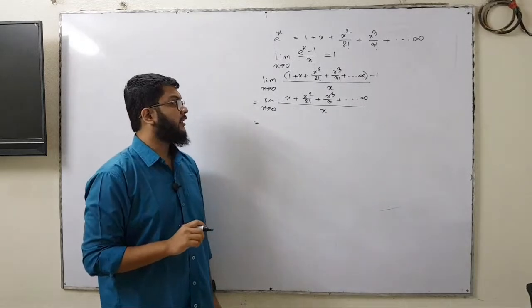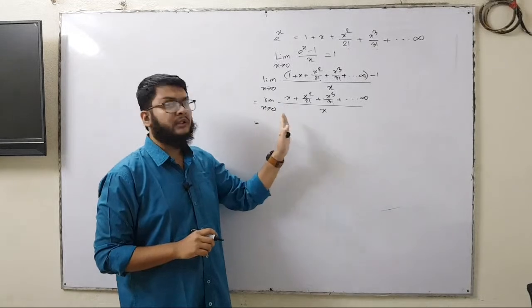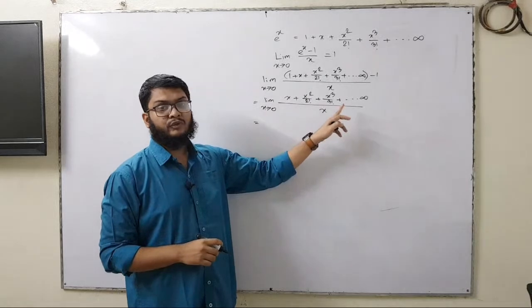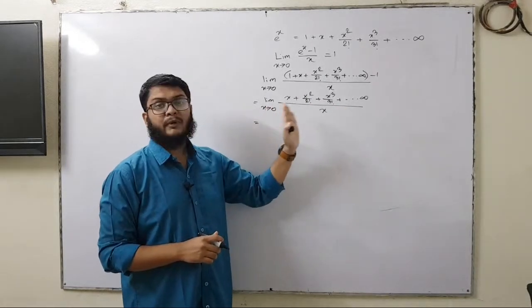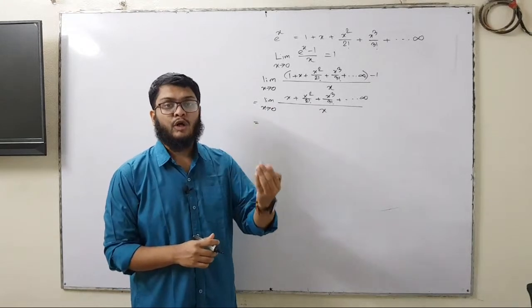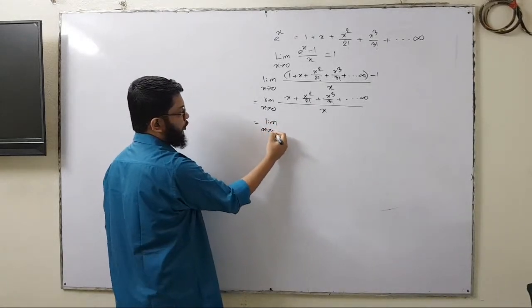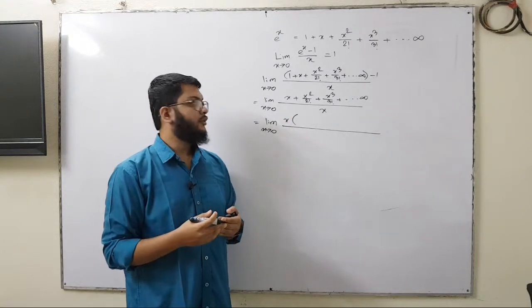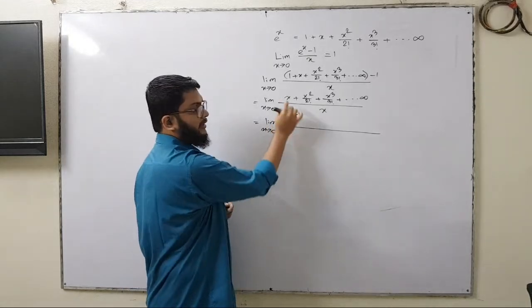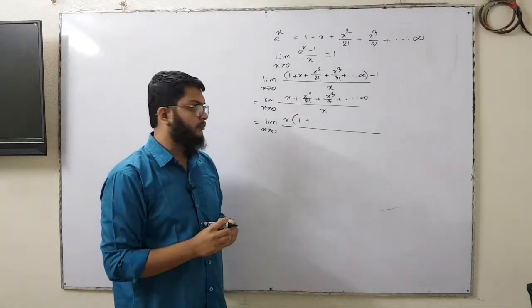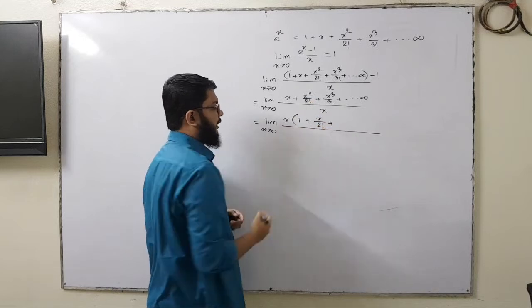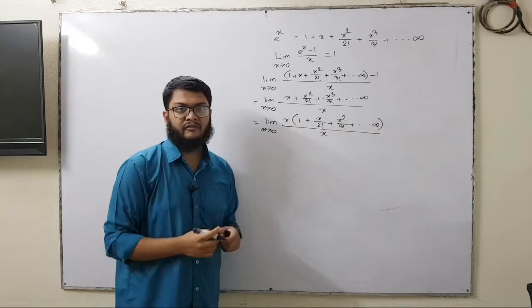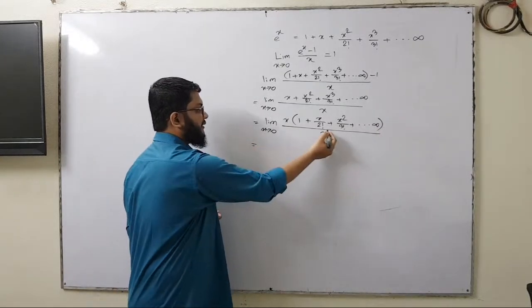We can see that in the numerator all the terms contain x, and the power of x is increasing — meaning in the next term we have x to the power 4 divided by 4 factorial. So in all upcoming terms we will always have an x, which means we can take x as common. Taking x as common means dividing all the terms by x. So x divided by x gives 1, then x squared divided by 2 factorial becomes x by 2 factorial, and so on. We can then cancel this x with the x in the denominator.